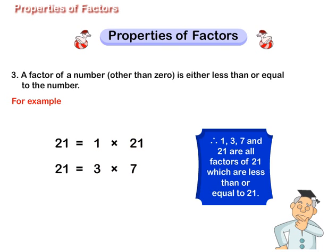Therefore, 1, 3, 7 and 21 are all factors of 21 which are less than or equal to 21.